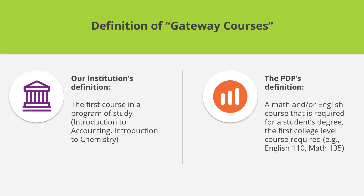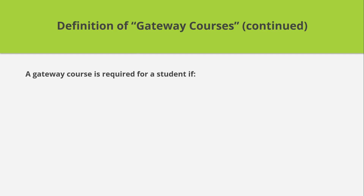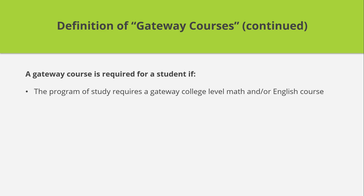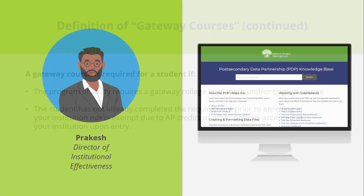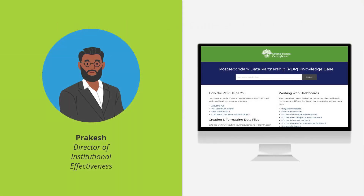Additionally, to determine if Gateway courses are required for a student, the following conditions need to be met: there is a Gateway college-level course requirement in the program of study, and the student has not already completed the requirement prior to enrolling at your institution, nor is exempt due to AP credits or other options accepted upon entry. Prakash will need to meet with the Curriculum Committee to have them identify courses that match the PDP Gateway course definition. As he finishes his preliminary scan, he realizes he needs to build a working group of colleagues to help define and identify these data elements.